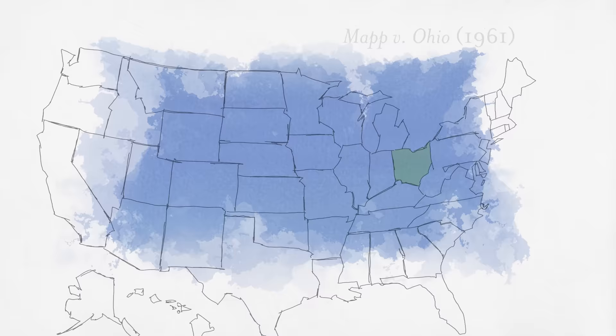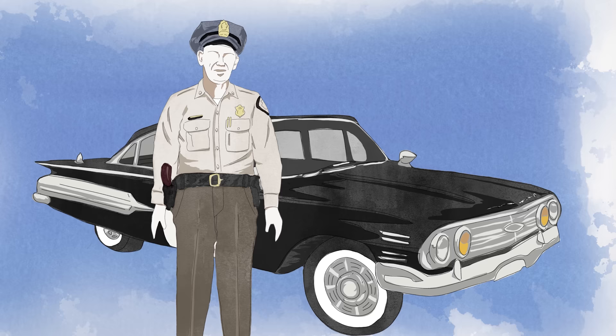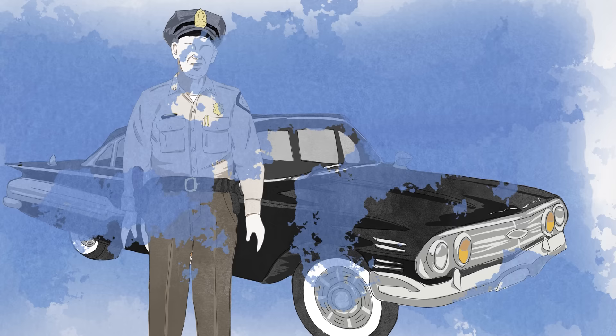Mapp v. Ohio involved a key question in American jurisprudence. The question is: what should we do when police officers commit an unconstitutional search? Should we allow them to use the evidence that they've found, or should we exclude the evidence as a way of deterring police officers from committing unconstitutional searches?